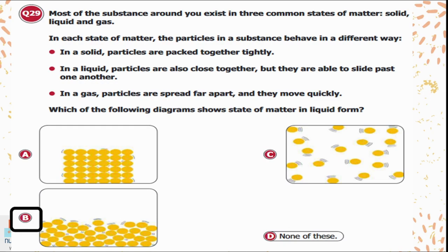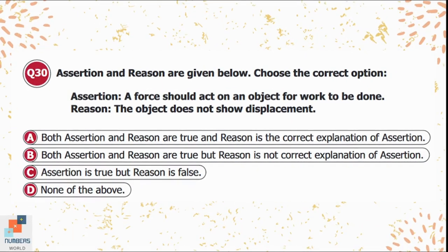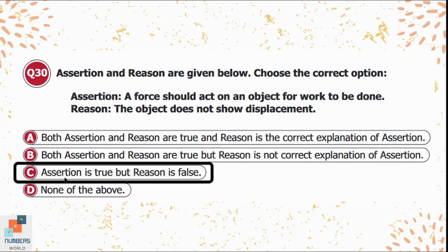Question 30: Assertion and reason are given. Assertion: a force should act on an object for work to be done. Reason: the object does not show displacement. Options: A) both are true and reason is correct explanation, B) both are true but reason is not correct explanation, C) assertion is true but reason is false, D) none of the above. Option C is correct — the assertion is true, but the reason is false.